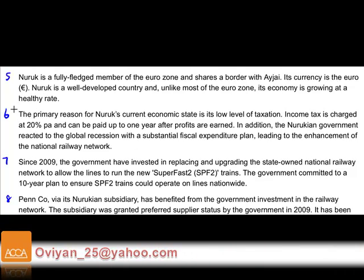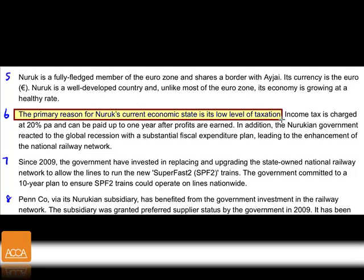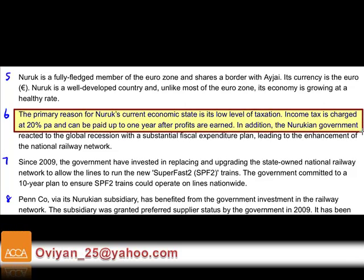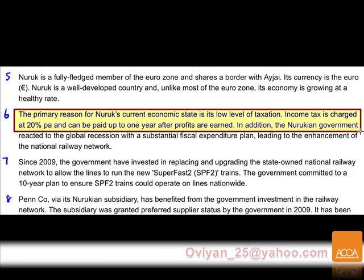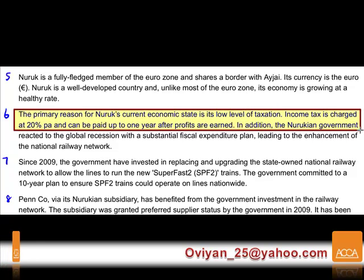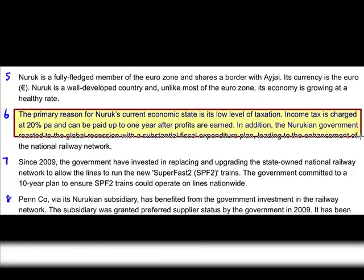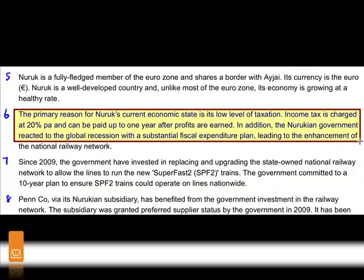Paragraph six: the primary reason for Nuruk's current economic state is the low level of taxation — income tax charged at 20%. In paragraph one, Penn is in Agay charging 25%. If you bring profits back to Agay, you pay another 5% differential, subject to any double tax agreement. Additionally, the Nurukian government reacted to the global recession with substantial fiscal expenditure, enhancing the national railway network.